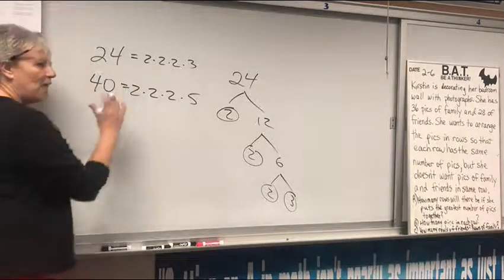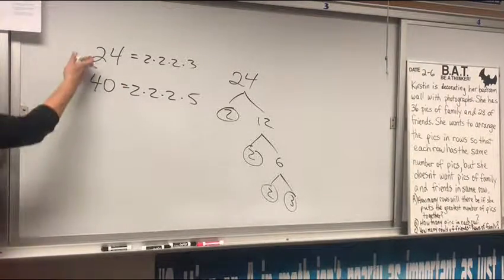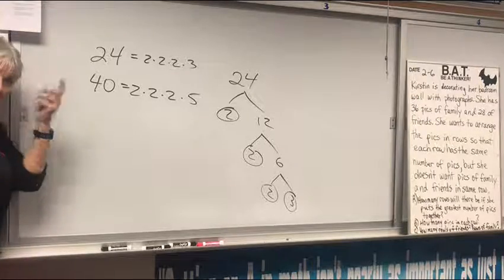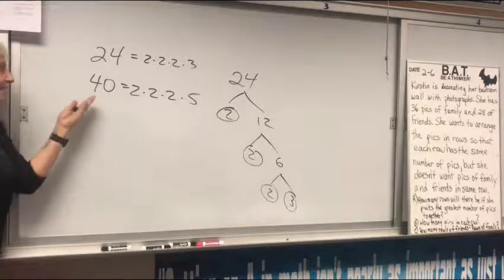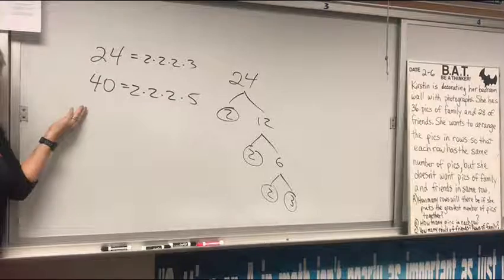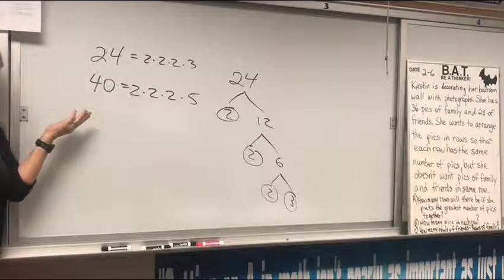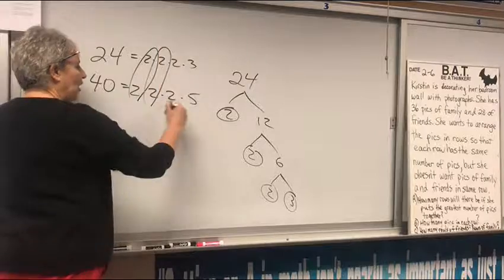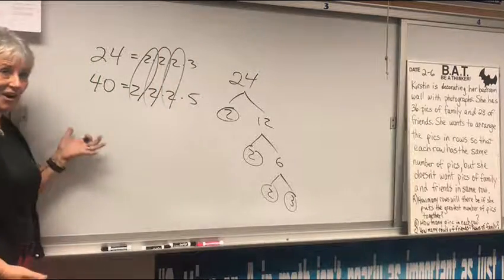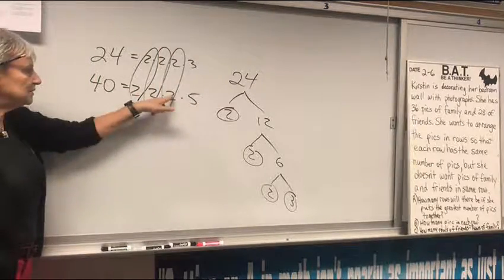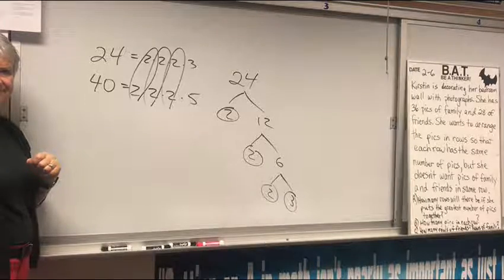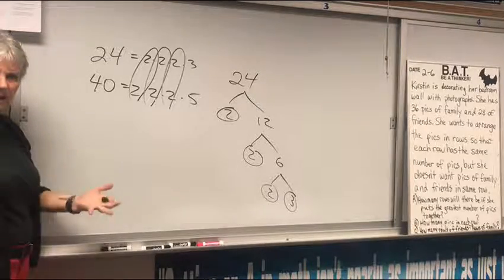When you find the greatest common factor, most of you can do this in your head because you have some math sense. The biggest number that goes into both of these is 8. That's the GCF. The way to get it the hard way is 2 times 2 times 2 is 8. That's where it comes from.